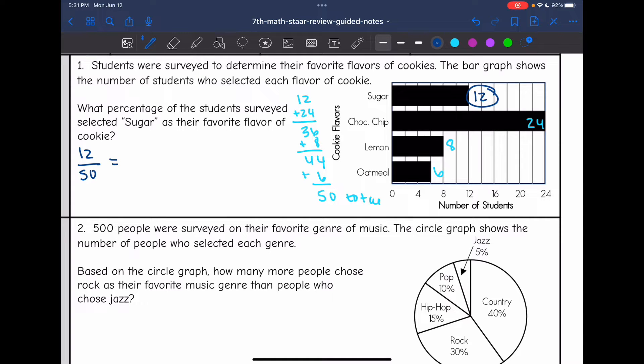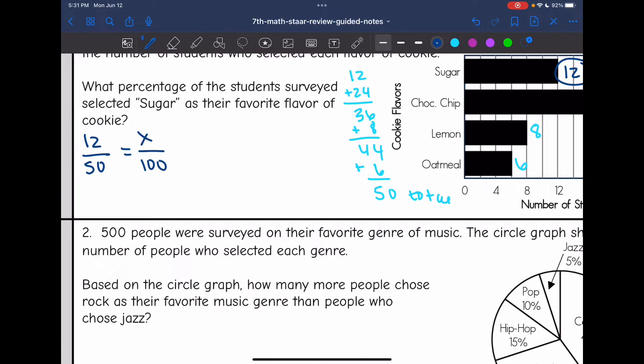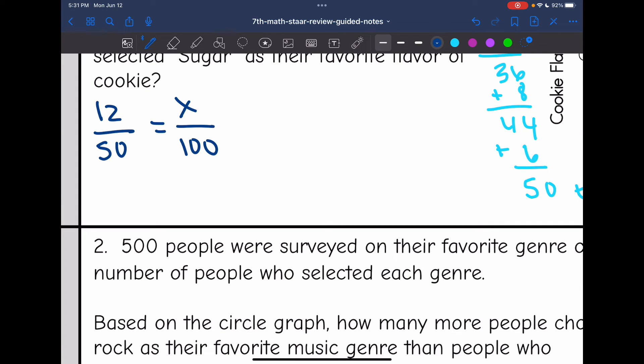So there were 50 total that were surveyed. So 12 out of 50 chose sugar. And now I can set up a percent proportion to figure out what percent out of 100 would choose sugar based on this bar graph. So this one, I'm going to go ahead and solve it as is, even though I could simplify this because I see the relationship. 50 times 2 would get me to 100. So that means 12 times 2 will get me X, which is 24. So that means 24% chose sugar as their favorite.